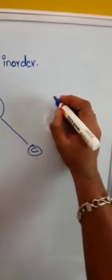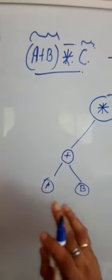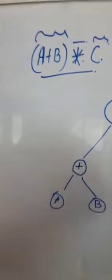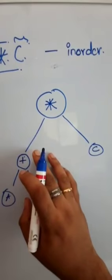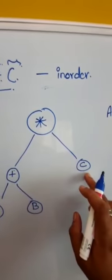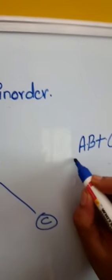For post-order traversal, we visit the left subtree first: node a, then node b, then their operator plus. After backtracking, we move to the right subtree and retrieve c, and finally visit the root star. So the post-order expression is: a b plus c star.